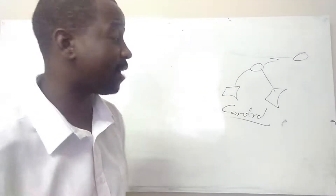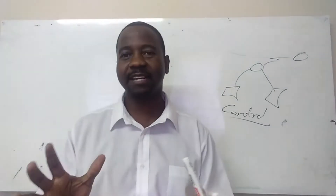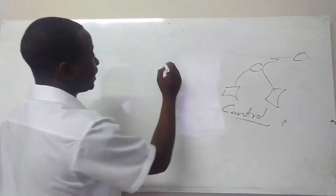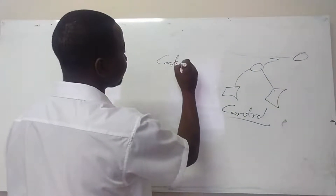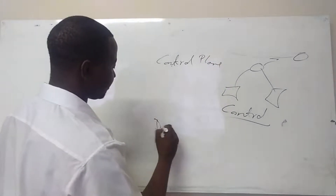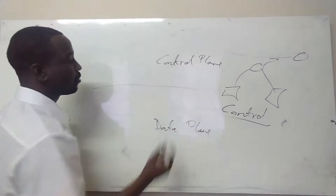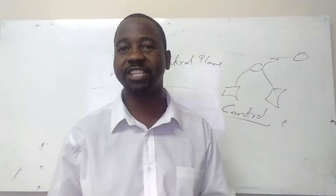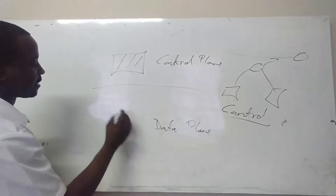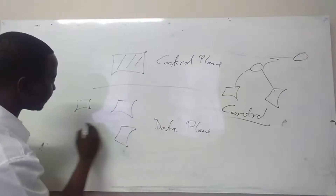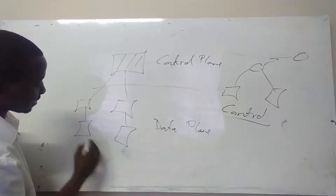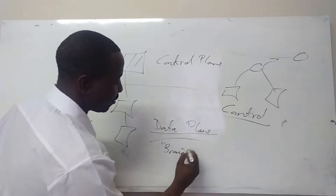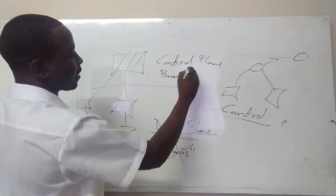With software defined networks, what we have is a situation where we are trying to separate the control of the network from all the devices and centralizing it into one or just a few devices. So what we end up having is what can be called the control plane and the data plane. In the control plane, that's where we have the devices that are going to have all the controls and all the configurations for the network. The configurations would then be propagated to the various packet forwarding devices on the data plane. So the data plane no longer has the brains of the network.